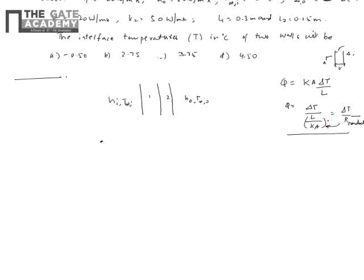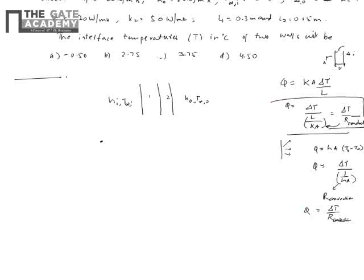The convection resistance: heat lost from a plane wall surface is Q = h·A·(T_b − T∞) = ΔT / R_conv, where R_conv = 1/(h·A). So for steady-state heat transfer: conduction resistance R = l/(k·A), and convection resistance R_conv = 1/(h·A).